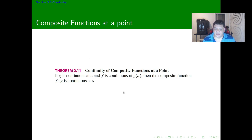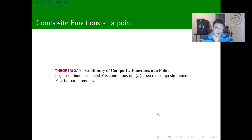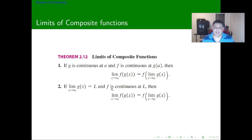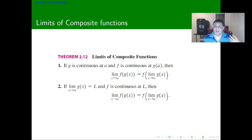Let's talk about continuity of a composite function. If G is continuous at A and F is continuous at G of A, then the composite function F composed with G is continuous at A. Furthermore, if G is continuous at A and F is continuous at G of A, we can interchange limits — something used before for calculating limits with roots, powers, sine functions, and exponential functions. Anything composed with a continuous function allows us to put the limit inside without issues.